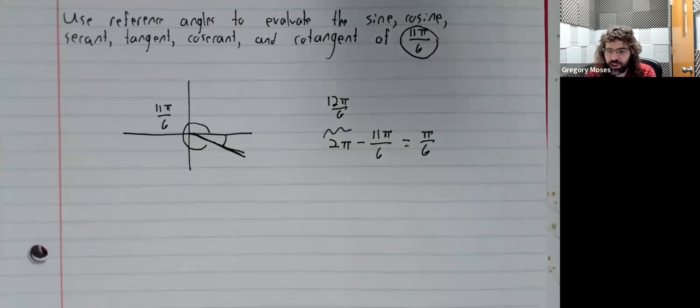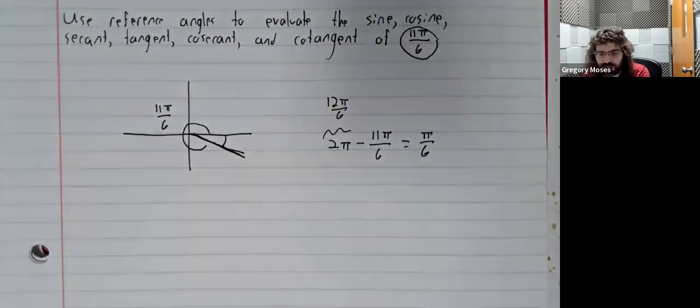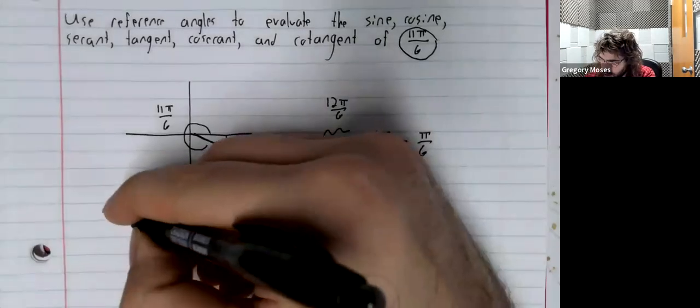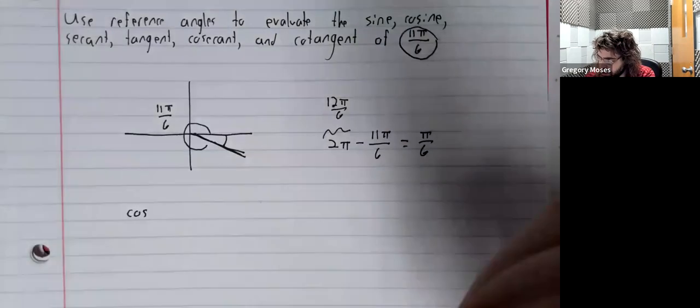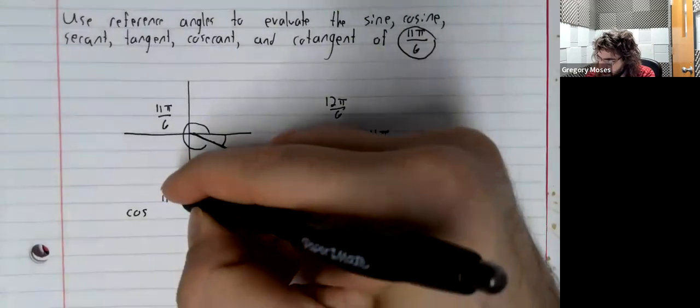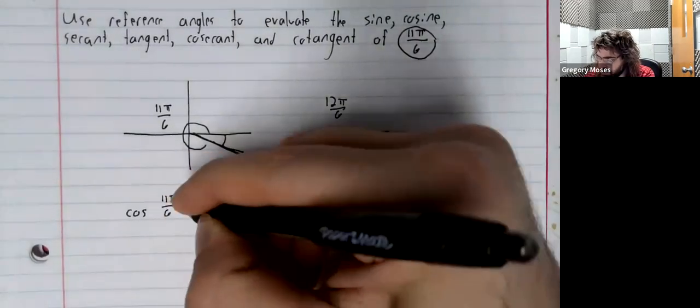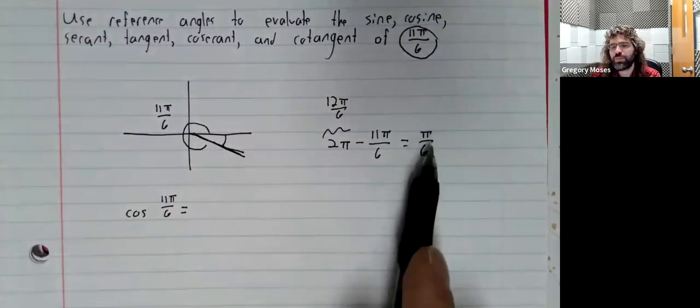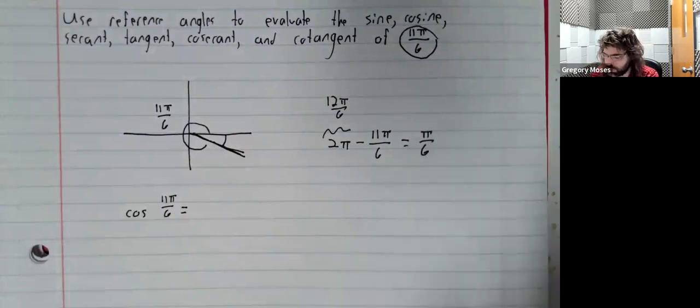we can fill in the sine and the cosine, first of all. So the cosine of 11 pi over 6 is, let's see. Well, the cosine of pi over 6 is the square root of 3 over 2.